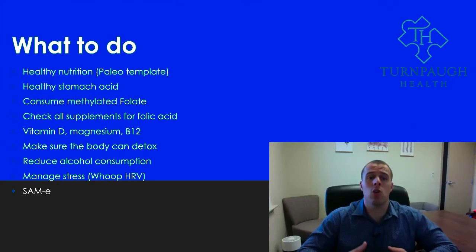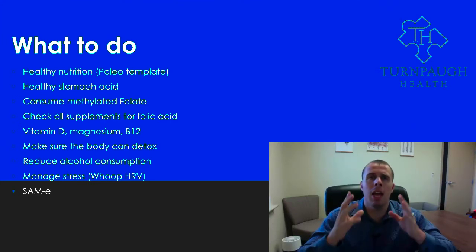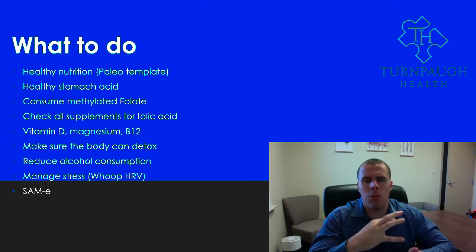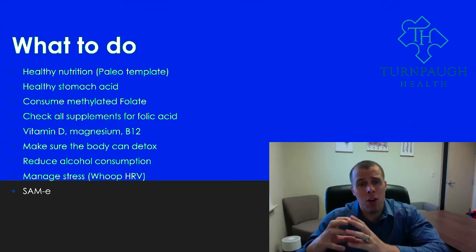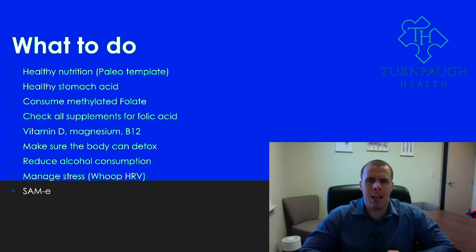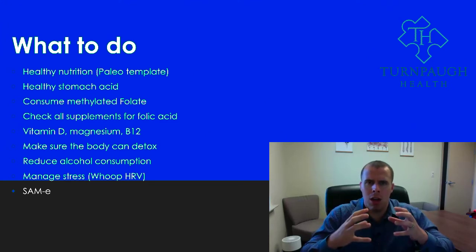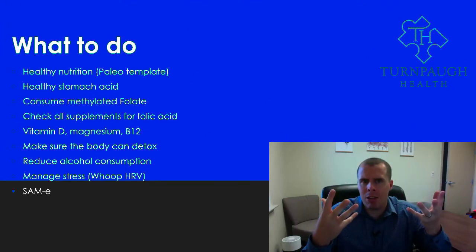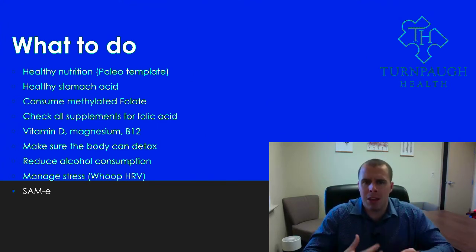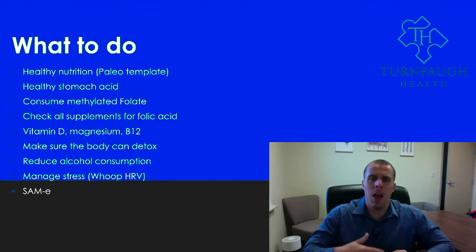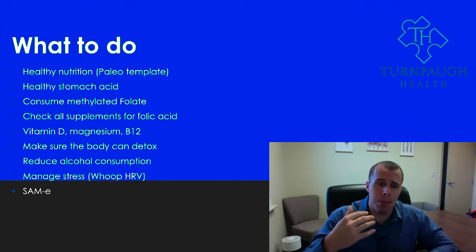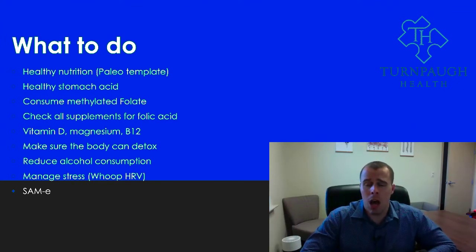What do we do? We want to make sure we're eating healthy nutrition — a paleo template that is high in antioxidant-rich, colorful vegetables and some fruit, good protein, and good healthy fats. That means avoiding gluten, dairy, sugar, corn, and soy. We want to make sure we have healthy stomach acid, because stomach acid helps the absorption of B vitamins and helps break down folic acid into its methylated form. If we're taking PPIs — proton pump inhibitors like Nexium or Prilosec — these block the absorption of these essential vitamins and would block stomach acid.